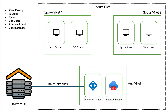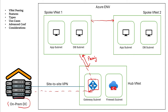Another advanced scenario is gateway transit. When you create a peering connection between two vNets, you allow traffic from spoke vNet 1 to spoke vNet 2 and vice versa by default. But if you are using a gateway, you must specifically define that gateway traffic should be forwarded to the spoke network. While creating the peering connection on the hub side, you define that the gateway in the hub network should be able to forward traffic to the spoke network. On the spoke side, you define that traffic from the gateway should be allowed. Once this is done, on-premises resources can connect to resources in the spoke vNet using the VPN gateway in the hub.